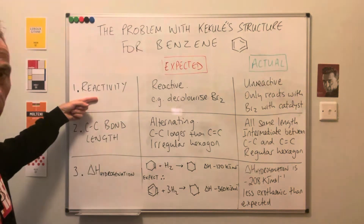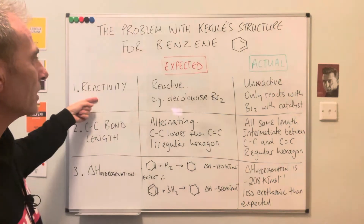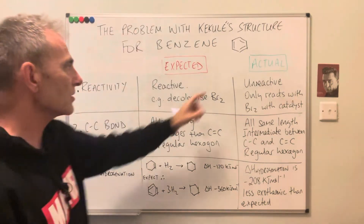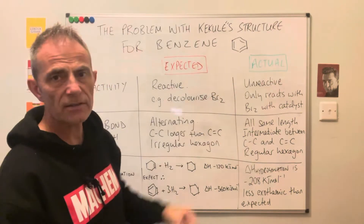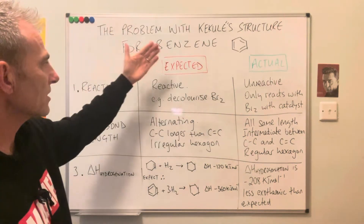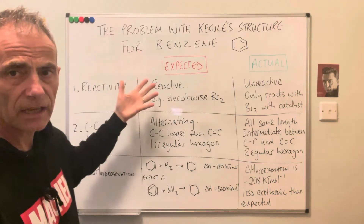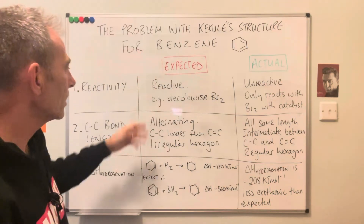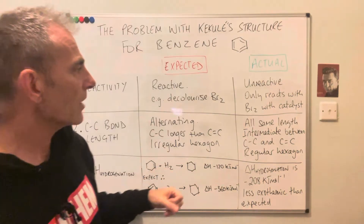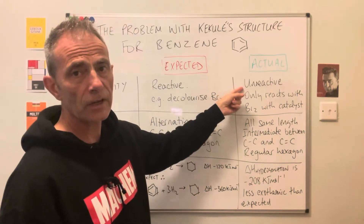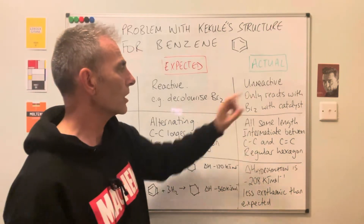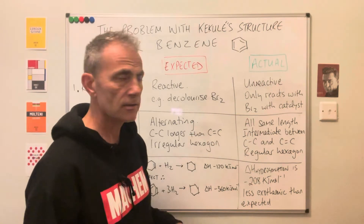The first bit of evidence is all about the reactivity of benzene. Because Kekulé's structure is based on an alkene with its carbon-carbon double bond, you would expect it to be reactive, just like alkenes are, and therefore decolourise bromine. What was found was that it was actually unreactive — it didn't react with bromine ordinarily, and would only react with bromine if a catalyst was present.